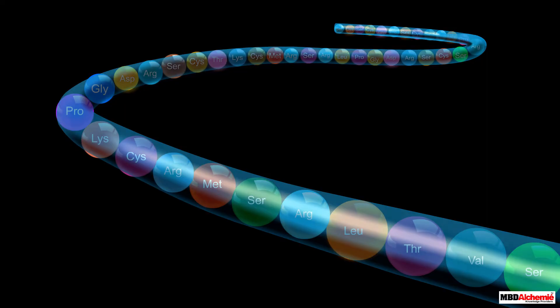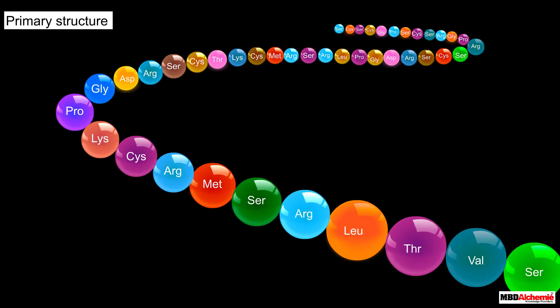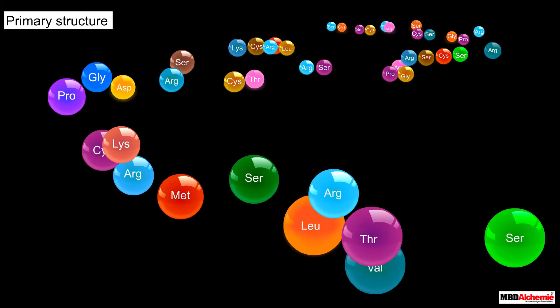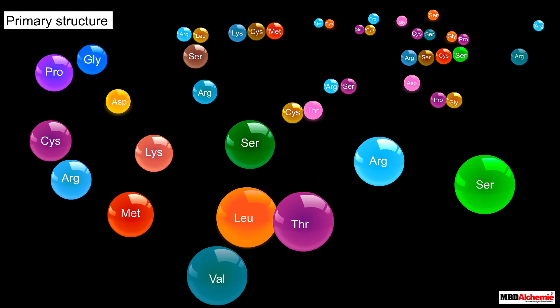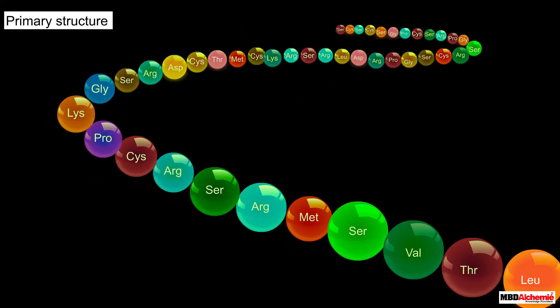The sequence of amino acids in a polypeptide chain of a protein is called its primary structure. If the sequence of these amino acids is changed, a new protein gets formed.